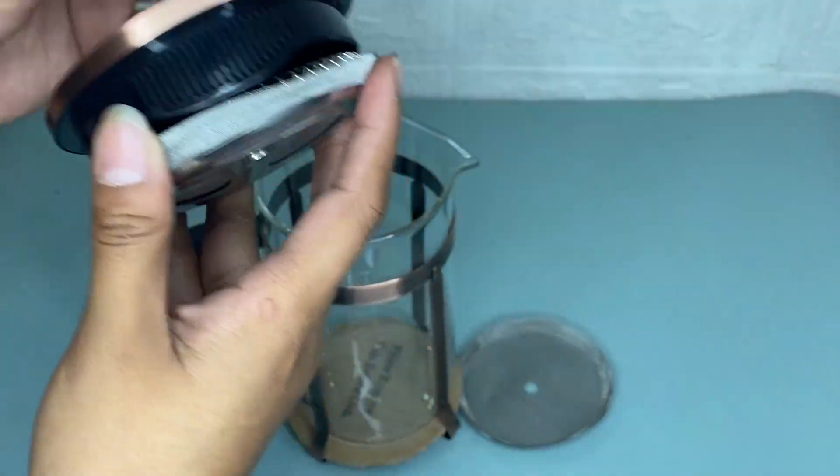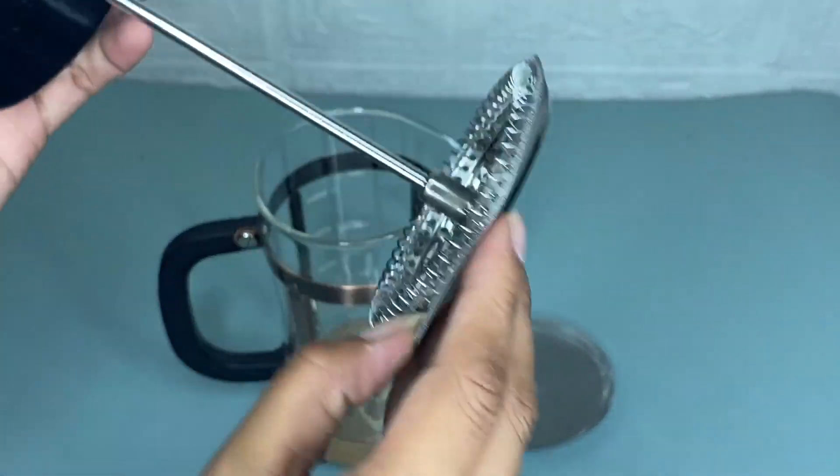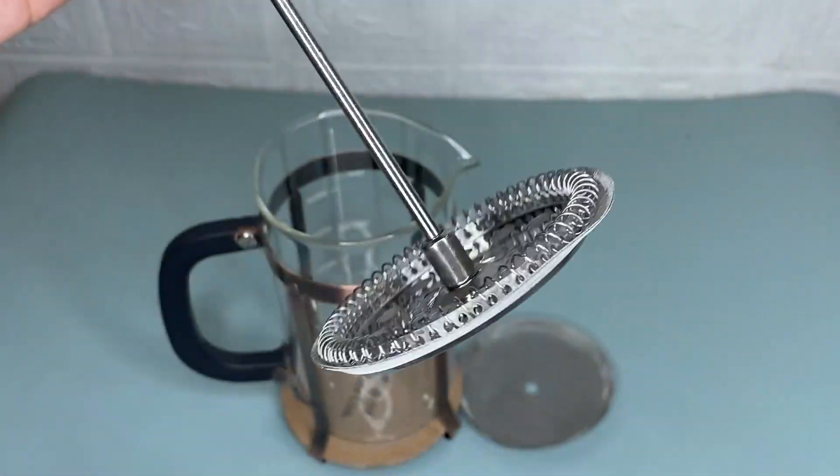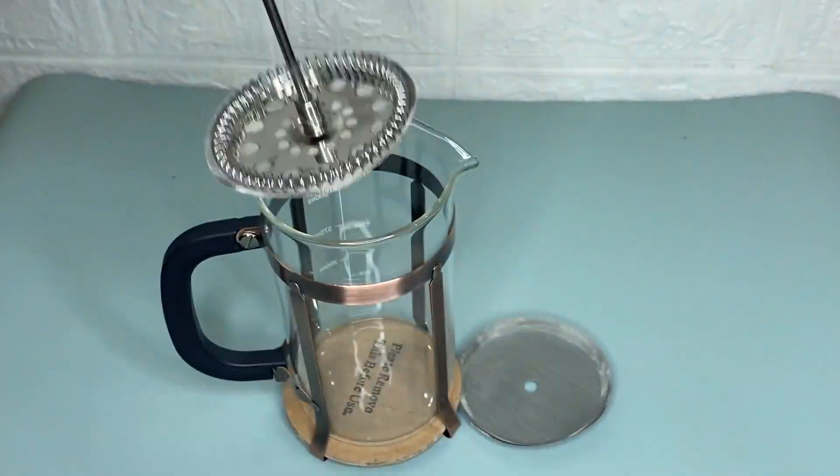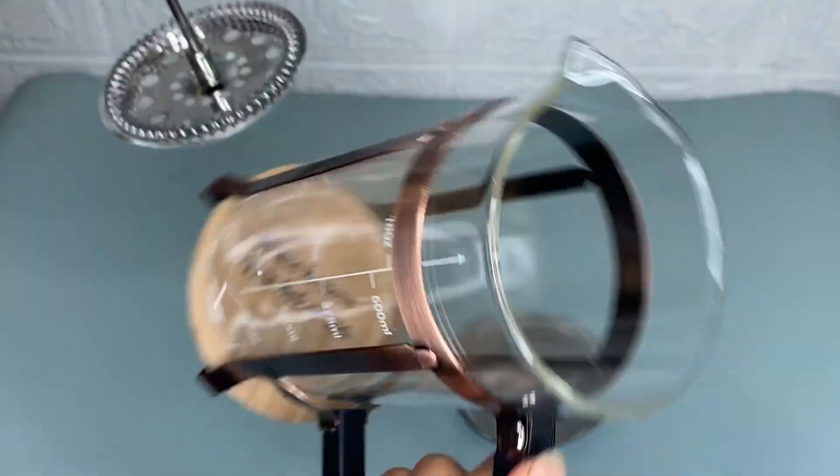As you can see, we have here a four-layer stainless steel filter designed to keep grounds out of your coffee. The removable glass is easy to clean, and it has a 25-ounce or five-cup capacity.